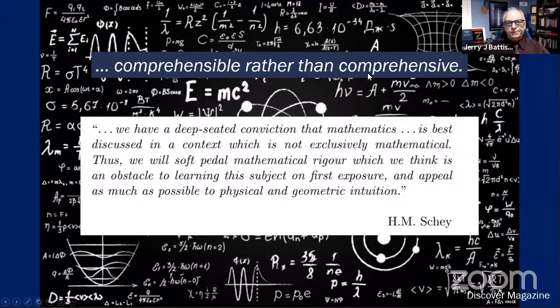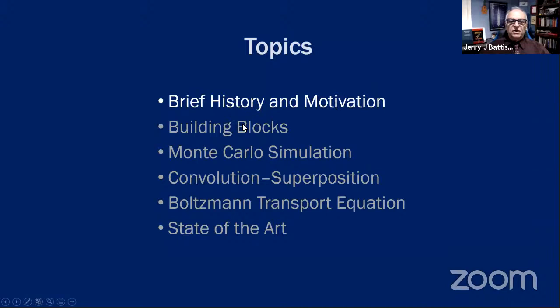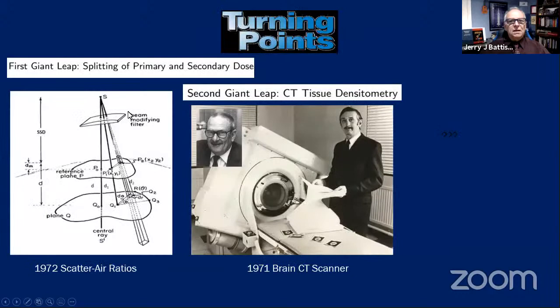I'll cover a brief history of these algorithms. There were two giant leaps in the development of dose calculation algorithms. The first was Cunningham's splitting of the primary and scattered doses. Remarkably, in 1972 he developed a pencil beam model well ahead of the current pencil beam models, which allowed for passage through a beam compensator and tissue.